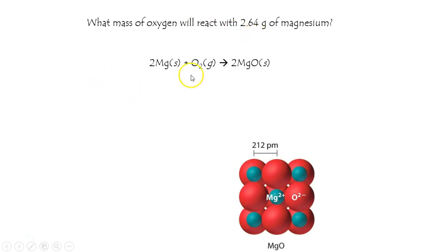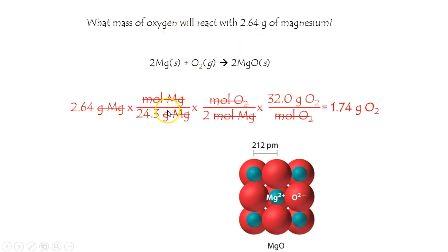Start with what you're given. Draw your 3 lines. Make sure you're writing at the end equals blank grams of O2. That'll keep you going in the right direction.